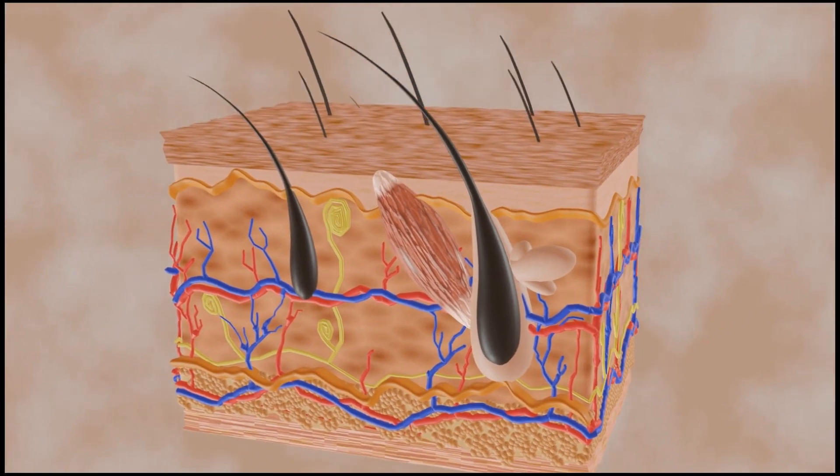Skin is the largest organ of the human body. It acts as a barrier between outside and inside environment. The skin has different thicknesses and textures.